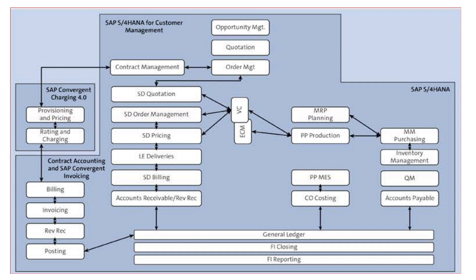Here we can see the new post-1909 SAP BRIM landscape. At the top we have Customer Management, which is Subscription Order Management SOM. At the left we have Convergent Charging SAP CC. At the bottom we have Contract Accounting SAP FICA and Convergent Invoicing SAP CI. As we can see, SOM, CI, and FICA are all under S/4HANA. The latest version of SAP BRIM currently is 2023.